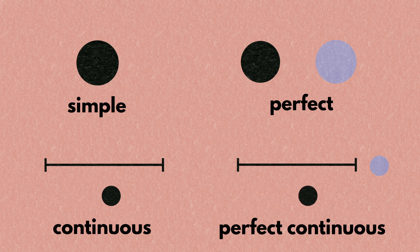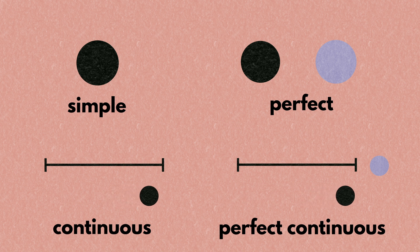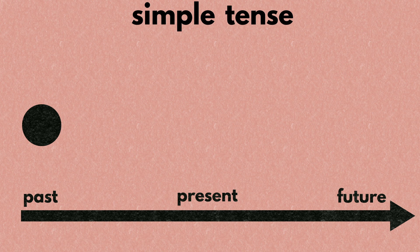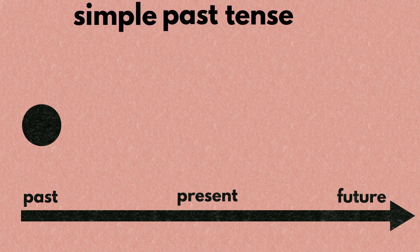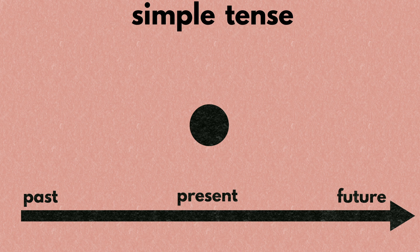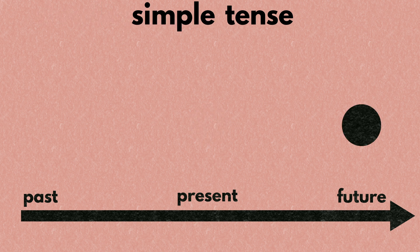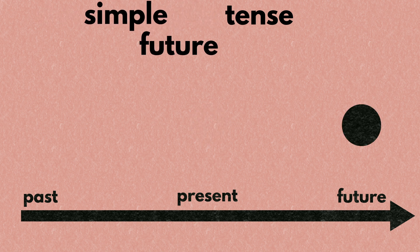Tenses are created by using the following four pieces of meaning in the past, present, and future time zone. The first piece is called the simple tense. It means something happens and there is nothing special about it. If something happened in the past and there is nothing special about it, it is called the simple past tense. If something happens in the present, it is called the simple present tense. If something happens in the future, it is called the simple future tense.